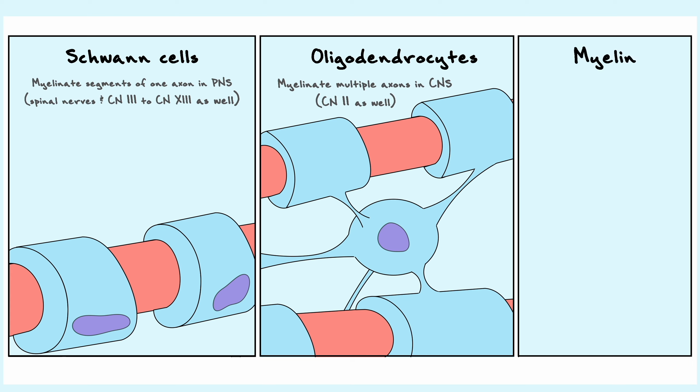To understand what myelin is, we can consider its formation. If we take Schwann cells for example, and we look at the cross-section of an axon, the formation of myelin sheets begin when the Schwann cell starts wrapping around the axon.